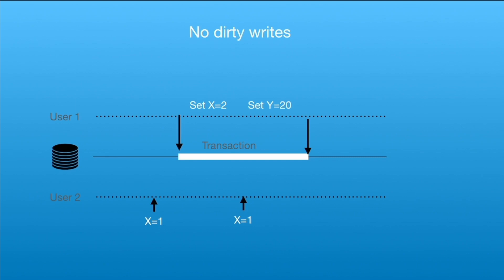For no dirty writes: suppose the initial value of x is 1 and a transaction is updating x to 2. If another client tries to write x equal to 1 again, that will not be possible. The database puts a write lock on that row. The second client either has to wait or will fail. This means no other transaction can overwrite values that are currently being updated by a running transaction. These are the two properties of read committed isolation.